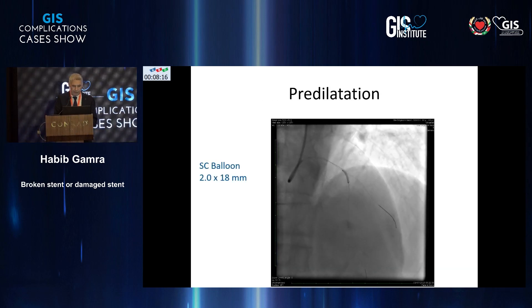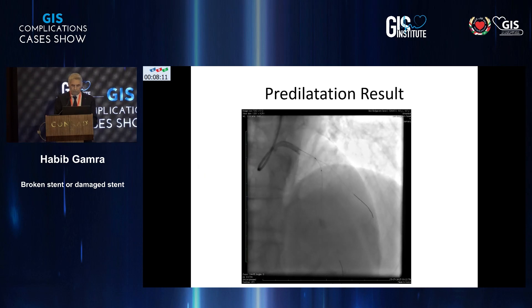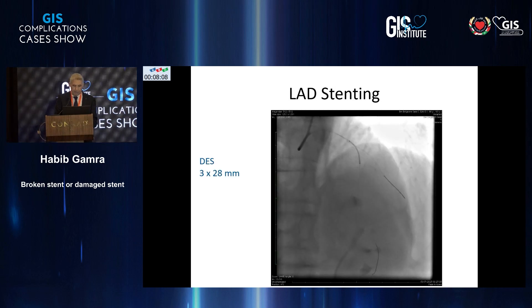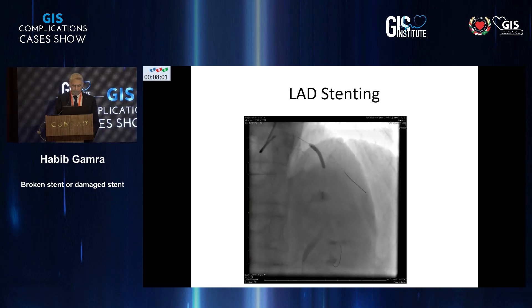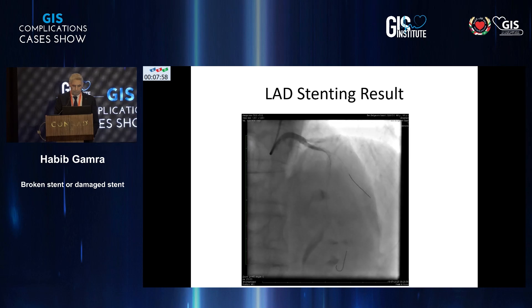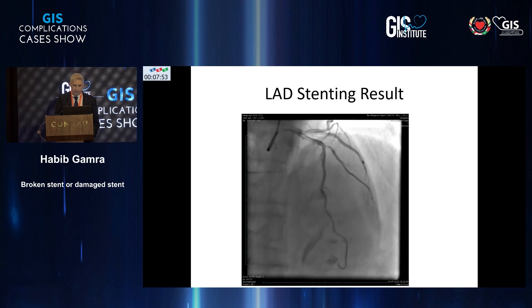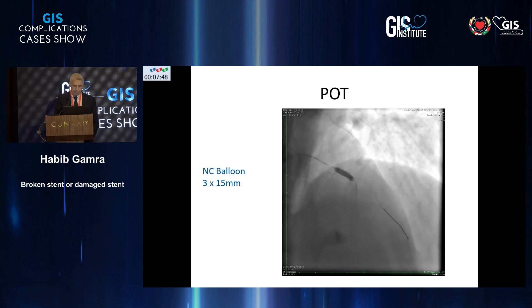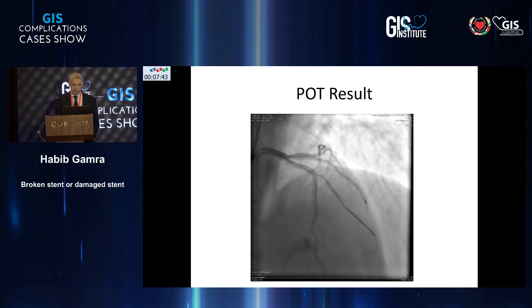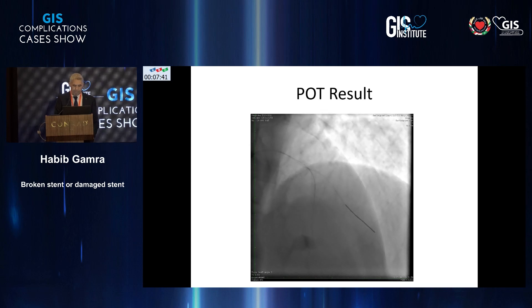Pre-dilation was done with a 2 by 18-millimeter balloon. This is the result. Then LAD stenting was done with a long stent, 3 by 28. You can see plaque shifting into the diagonal, so POT was done with an entry balloon, 3 by 15 millimeters. This is the result after the POT procedure.